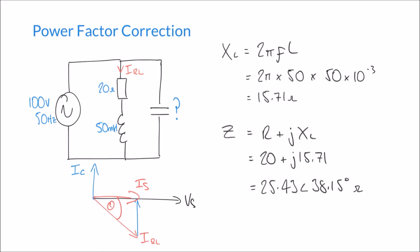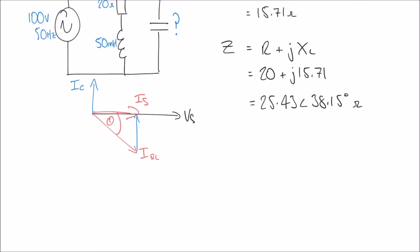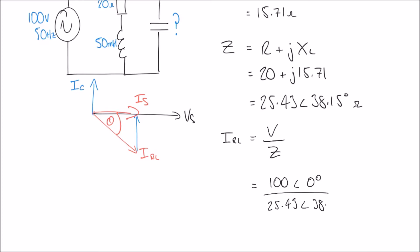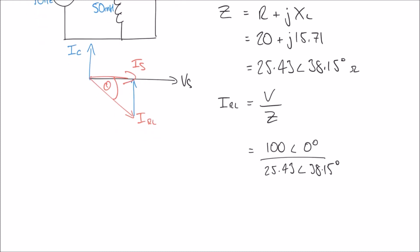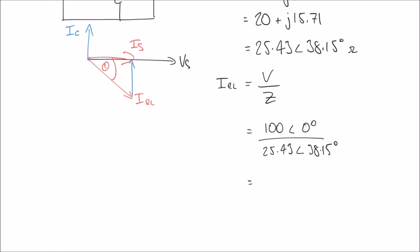Using Ohm's law to calculate IRL: IRL equals voltage divided by impedance, V over Z. The voltage is our reference at 100 volts at an angle of zero degrees, divided by our impedance of 25.43 at an angle of 38.15 degrees. Dividing the magnitudes and subtracting the angles when dividing in polar form, that comes out as 3.93 amps at an angle of minus 38.15 degrees.